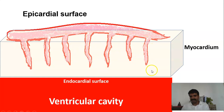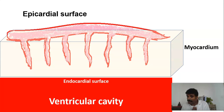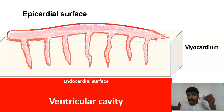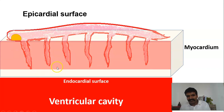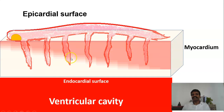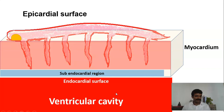The epicardial coronary arteries supply blood into the myocardium via perforators. Observe carefully that the perforators do not go the entire depth of the myocardium — they stop just above the endocardium. That area just beneath the endocardium is called the sub-endocardial region of the myocardium. The sub-endocardial region does not have very good perforator blood supply, making it the region most affected by a block.